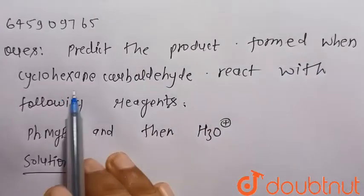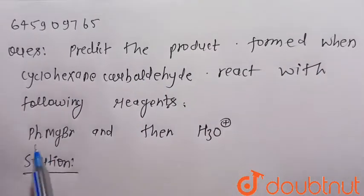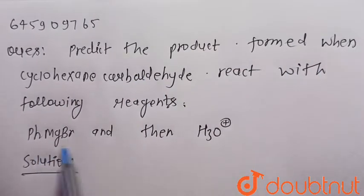Predict the product formed when cyclohexane carbaldehyde reacts with the following reagent, that is PhMgBr, so this is the Grignard reagent.